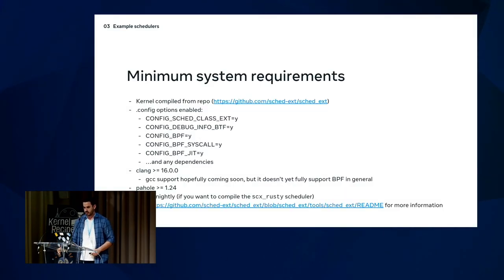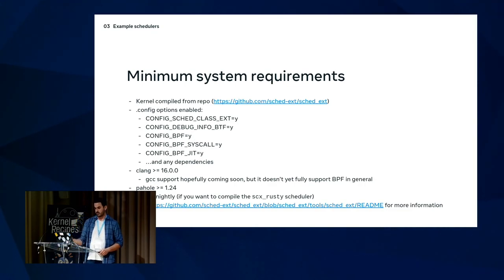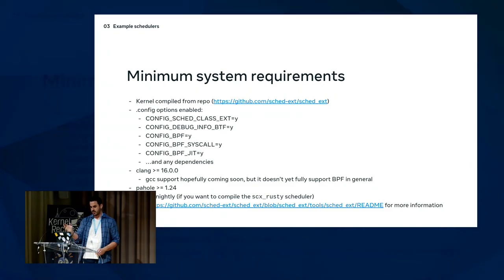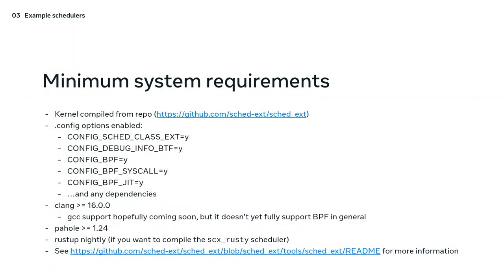To use sched_ext, you have to compile it from the repo since we're not done upstreaming it yet. You need specific config options, a newish version of Clang, and pahole. There are instructions on the linked page — you just need to download the dependencies, compile the kernel correctly, and you should be able to use it out of the gate.